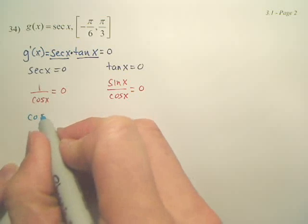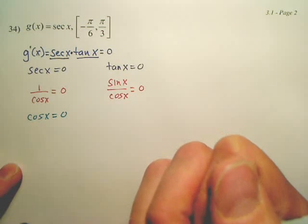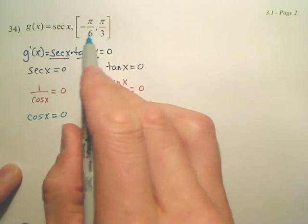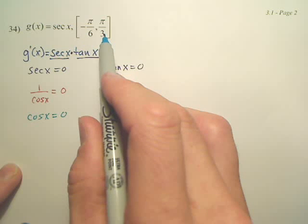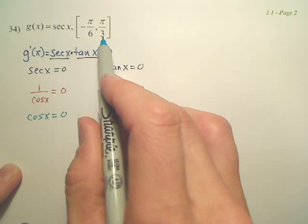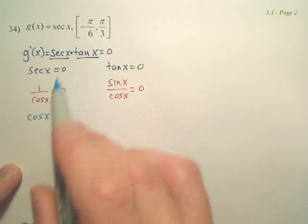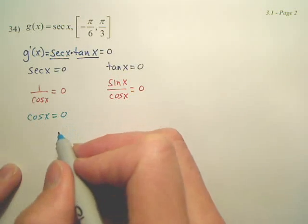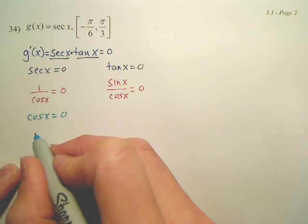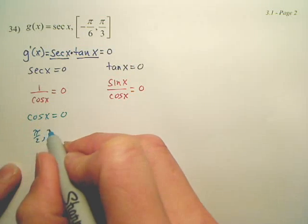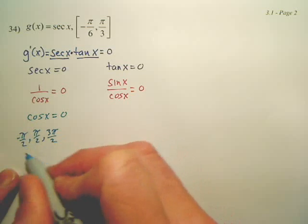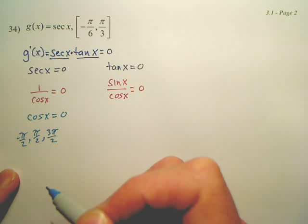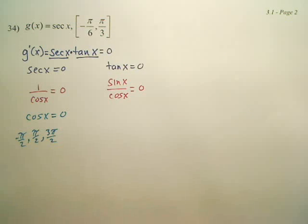So we set cosine x equal to zero. When does cosine equal zero in this interval? You have it at pi over two, three pi over two, negative pi over two — are any of those in the interval? No. So do we care about any of these? No. Okay, that was a waste.